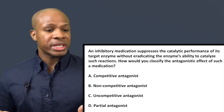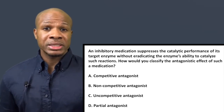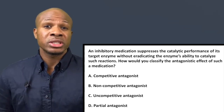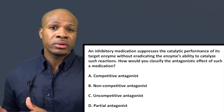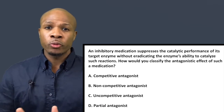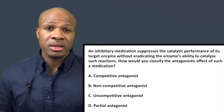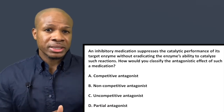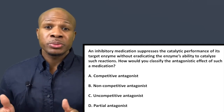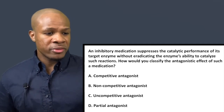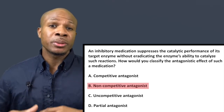Answer choice A says competitive antagonist. A competitive antagonist is one that competes with the substrate for the binding site of the enzyme. In this question, we're not being told anything about the medication competing with an agonist — we're simply told this medication suppresses the activity of the enzyme by itself. It doesn't sound like competitive binding, so the answer is no to answer choice A.